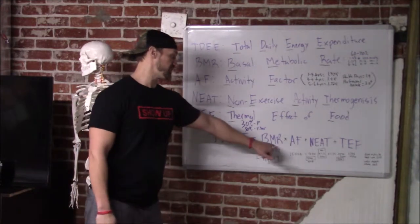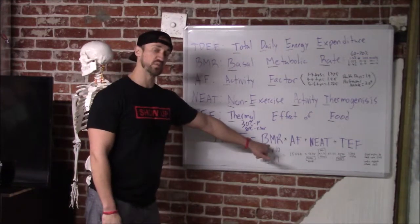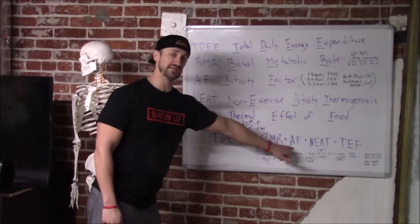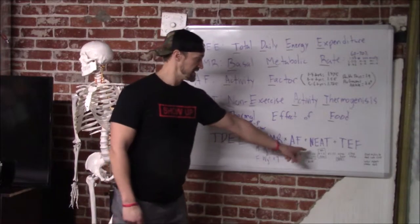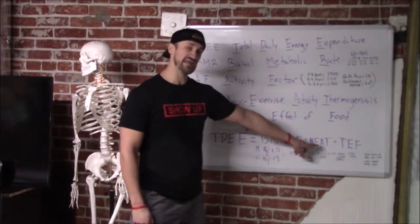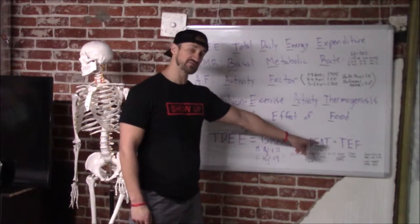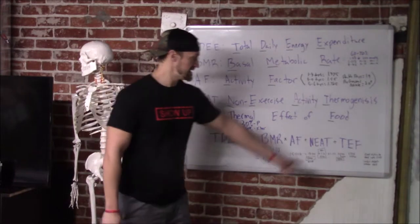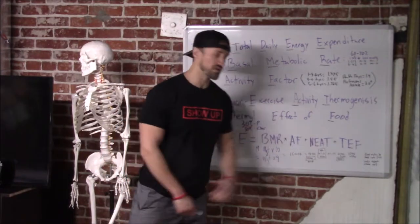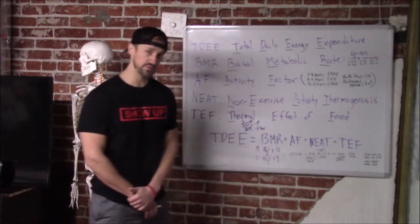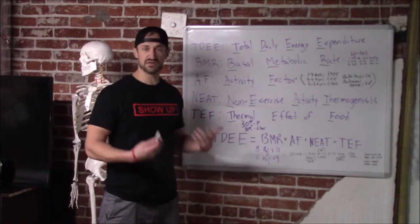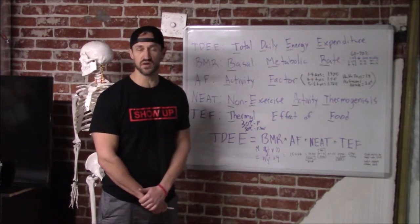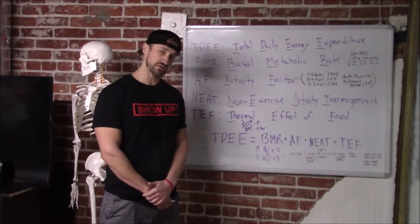The equation is your BMR, which is basal metabolic rate, multiplied by your activity factor. Then you add in your non-exercise activity thermogenesis, which is NEAT, and then your thermal effect of food, which is thermogenesis — the amount of calories that you burn from eating certain foods.